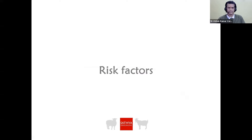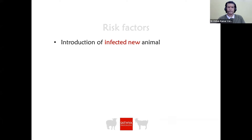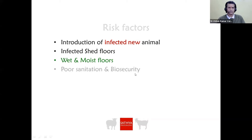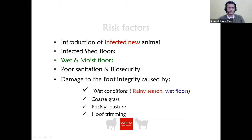Risk factors include introduction of an infected animal into a healthy flock, infected shed floors, wet and moist floors, poor sanitation and biosecurity, and damage to foot integrity. Wet conditions — particularly in rainy season — walking on coarse grass, prickly pasture, or injuries due to foot conditions are all risk factors for foot rot infection.